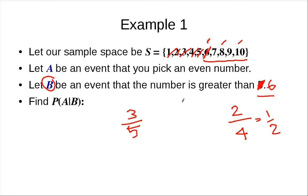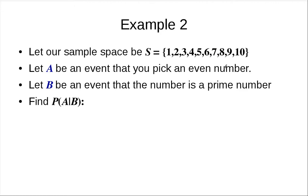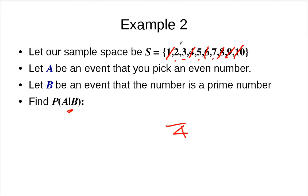If B is 'greater than six,' then 6 is also eliminated. You have 7, 8, 9, 10 remaining — four outcomes, two of which are even (8, 10) — so P(A|B) = 2 over 4 = one-half, which equals the case where you don't know B at all. Now let A be the event that you pick an even number and B be the event that the number is prime. We want P(A|B). The prime numbers here are 2, 3, 5, 7 — four numbers left — and only one even, which is 2 — so it's 1 over 4.